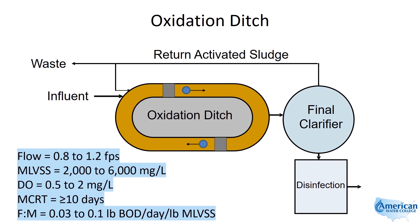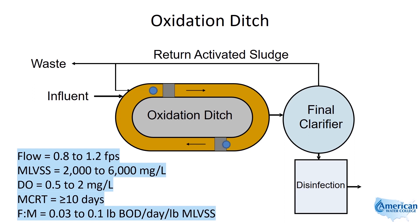Raw wastewater flows directly into the mixed liquor — there is generally no primary settling involved. There is usually some form of preliminary treatment such as racks, bar screens, or even comminution, but that is about it. So the wastewater flows directly into the ditch.